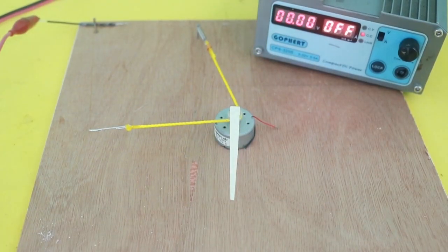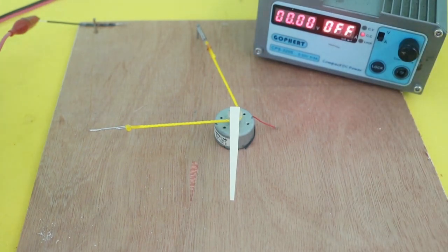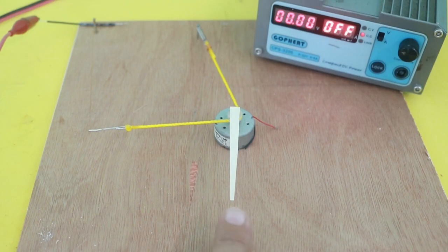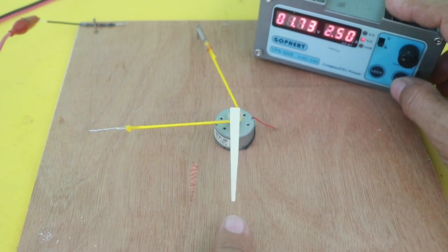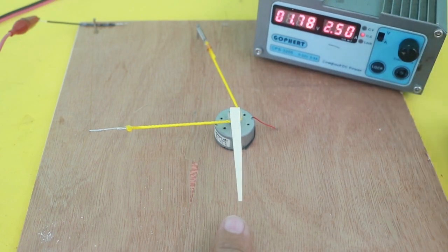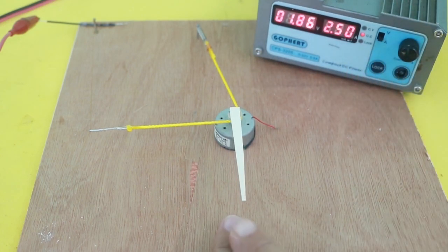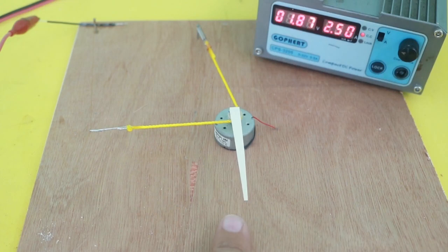Okay, the power supply is connected to the thin wire. Let me turn it on. Look at the position of the needle. Here we go. 2.5 amps and the needle moved to the right.